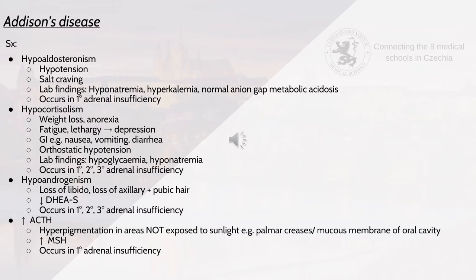Symptoms of Addison's disease include hypoaldosteronism features such as hypertension and salt craving, with lab findings of hyponatremia, hypokalemia, normal anion gap and metabolic acidosis — this occurs in primary adrenal insufficiency. Features of hypocortisolism include weight loss, anorexia, fatigue and lethargy leading to depression, GI features such as nausea, vomiting, diarrhoea, orthostatic hypotension, and lab findings of hypoglycemia or hyponatremia — occurring in primary, secondary and tertiary adrenal insufficiency. Hypoandrogenism features include loss of libido and loss of axillary and pubic hair, with decreased DHEA, occurring in all three types.